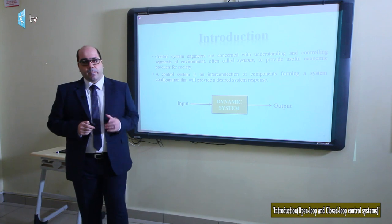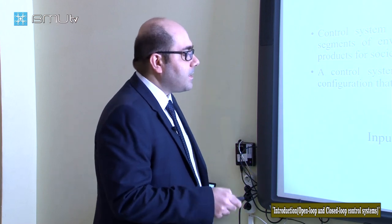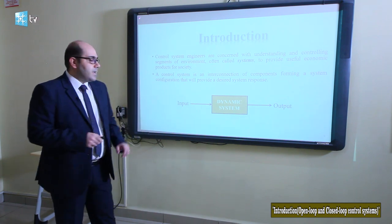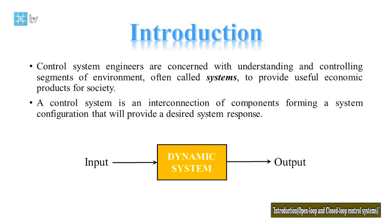Let's talk about the system. What is a system? A system is an entity to which we give input and get an output. We can say that a system is an interconnection of components forming a configuration, where these components work together as a whole.